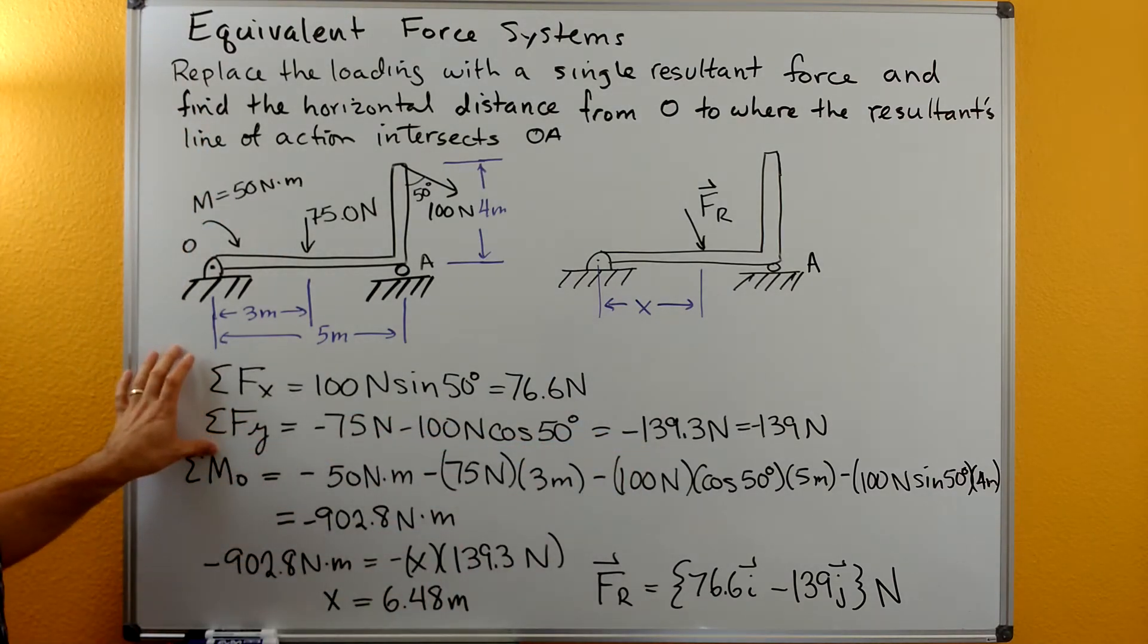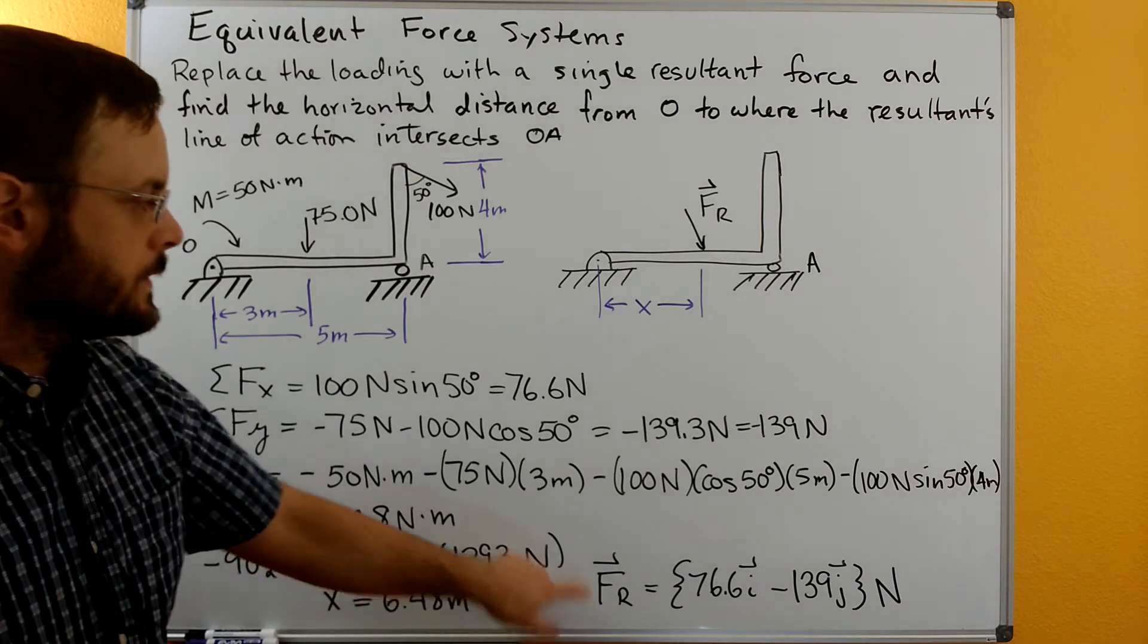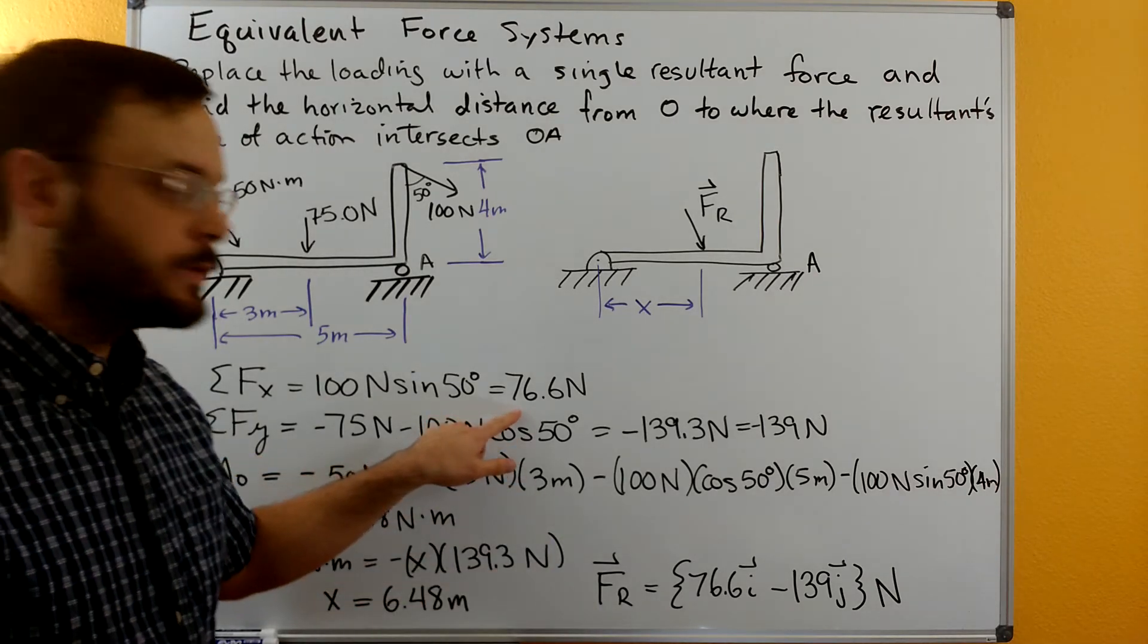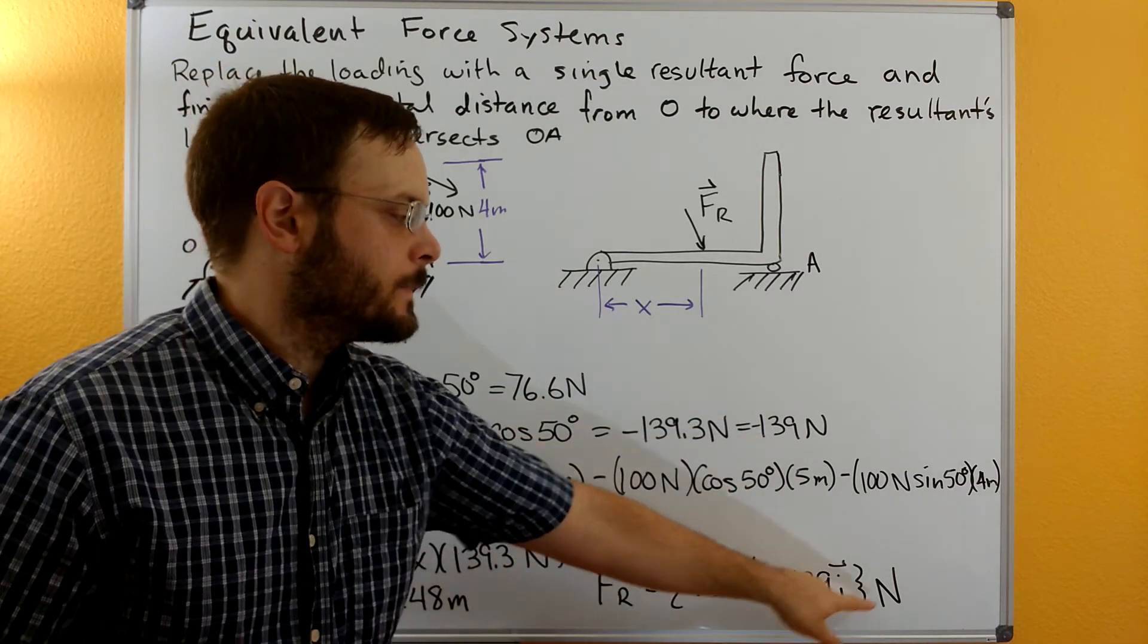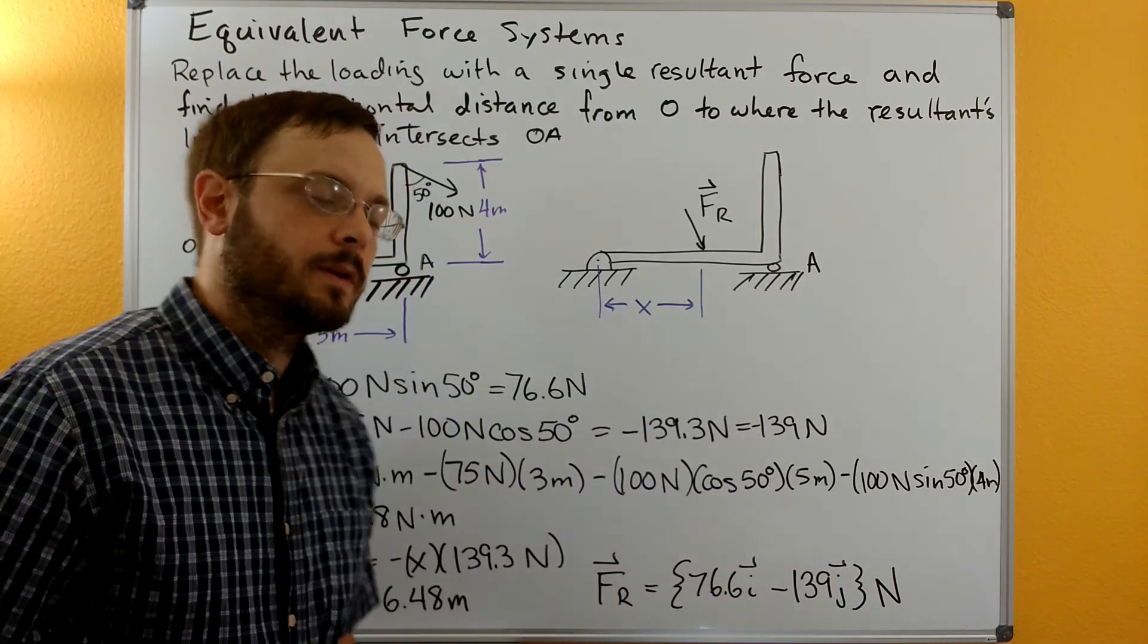So this is our resultant here and we can write the resultant as the 67.6 Newtons I minus the 139 J and bracket it and put the unit outside.